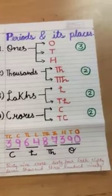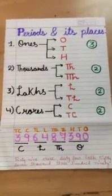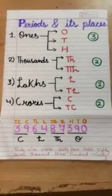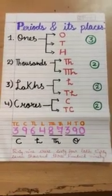So in the Indian place value chart, there are four periods, each with different places. In the ones period: ones, tens, hundreds — three places. In the thousands period: thousands, ten thousands — two places. In the lakhs period: lakhs and ten lakhs — two places. In the crores period: crores and ten crores — two places. This is how the periods and their places are arranged in the Indian place value chart.